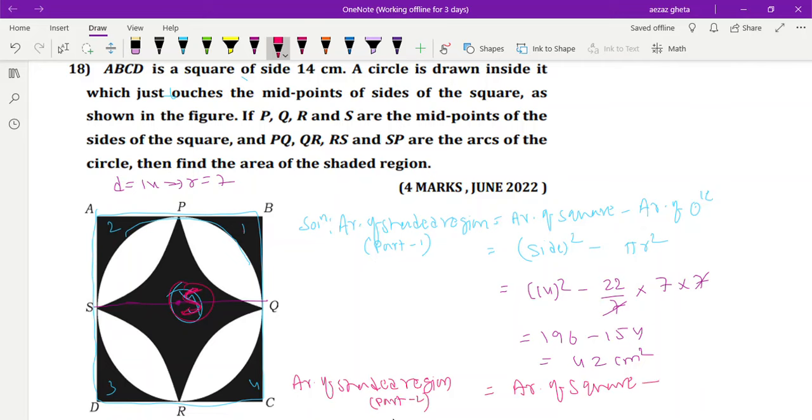From area of square, you should remove what? Can you tell me what you should remove? This is area of square, correct? From this, you should remove this much portion, like this. Four portions you should remove. What are those four portions? Minus four into area of sector. Got it?